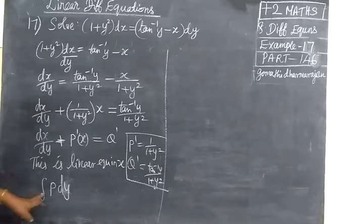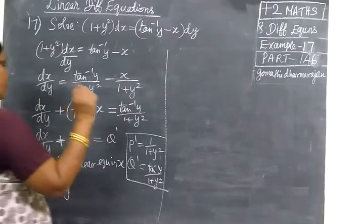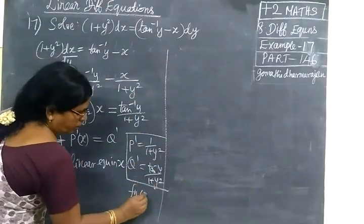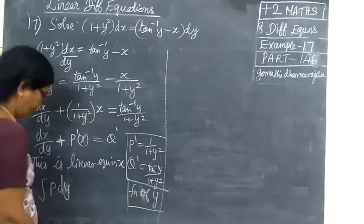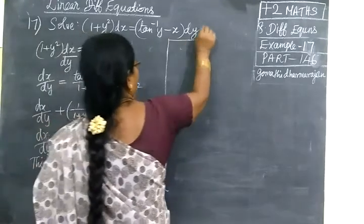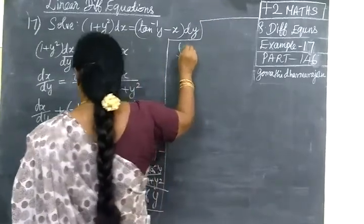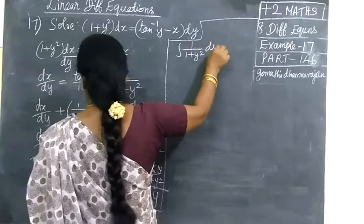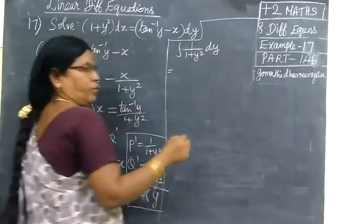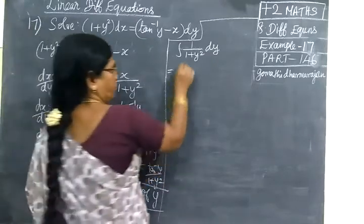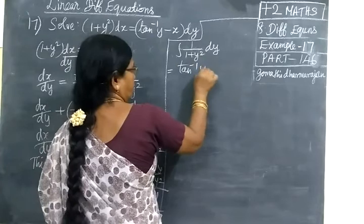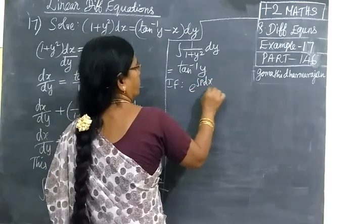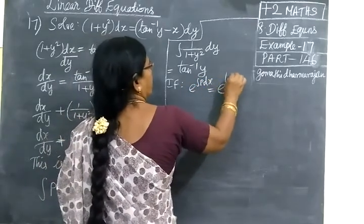First, we find the integral of p dy. Here, p equals 1 divided by (1 plus y squared). So integral of p dy equals integral of 1 divided by (1 plus y squared) dy, which equals tan inverse y. Therefore, the integrating factor is e to the power of tan inverse y.